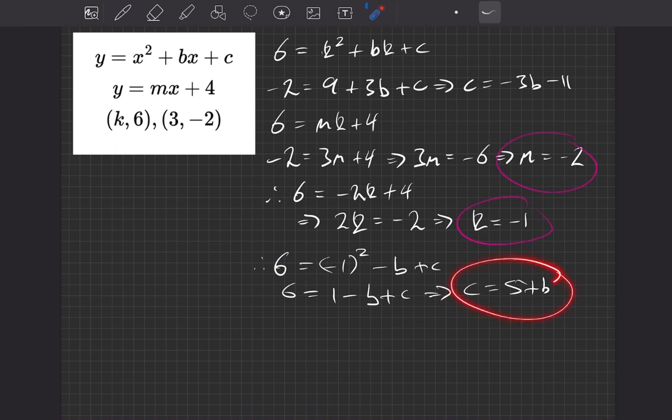So what we can do now, we can take these two equations, and because it's both c equals, we can set the other two sides equal to each other. You can either think of it like that, or imagine just substituting, like we'll replace this c with this thing instead. Ends up with the same scenario. So what do we get? Well, that 5 plus b is equal to minus 3b minus 11.